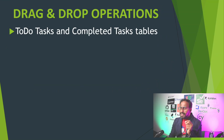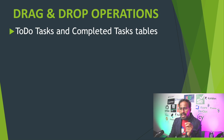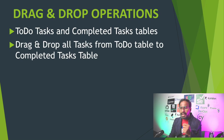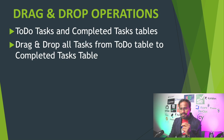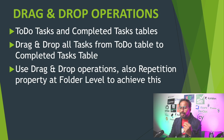In this lesson, what we are going to do is perform a drag and drop operation using two web tables. The first one is a web table called to-do tasks, and the other is called completed tasks. We are going to drag and drop all the tasks from the to-do table to the completed tasks table using drag and drop operations along with the repetition property at folder level.